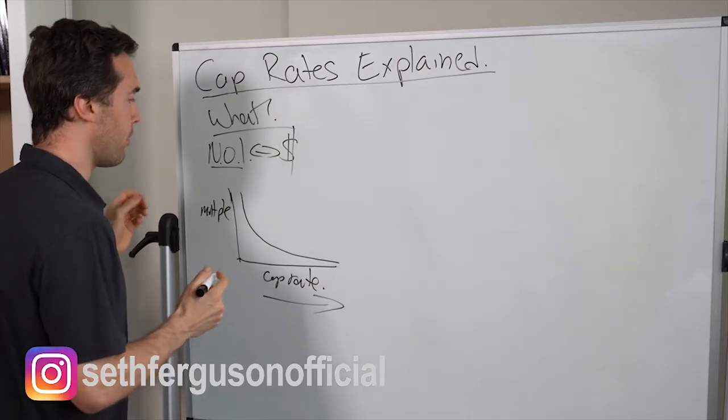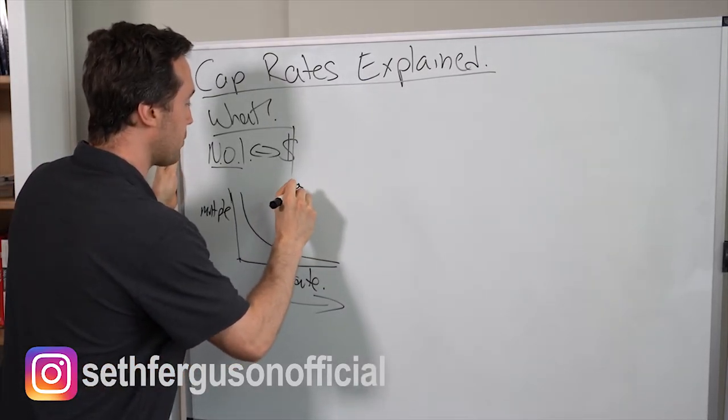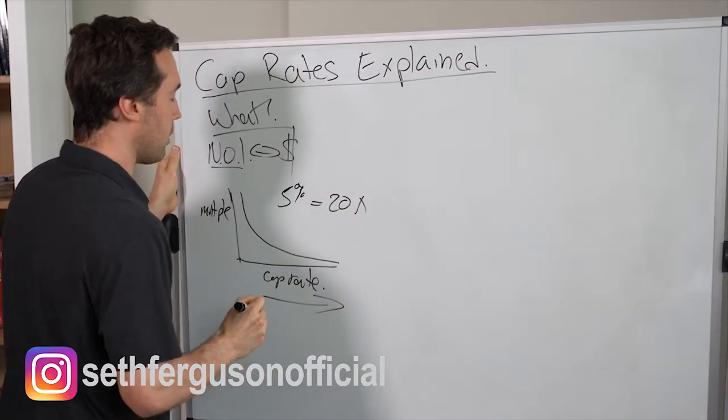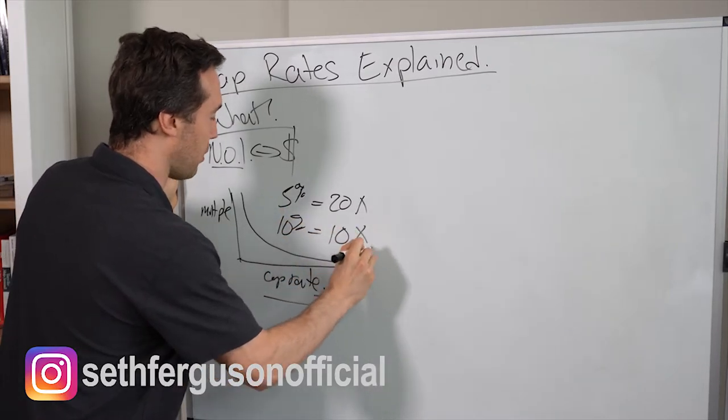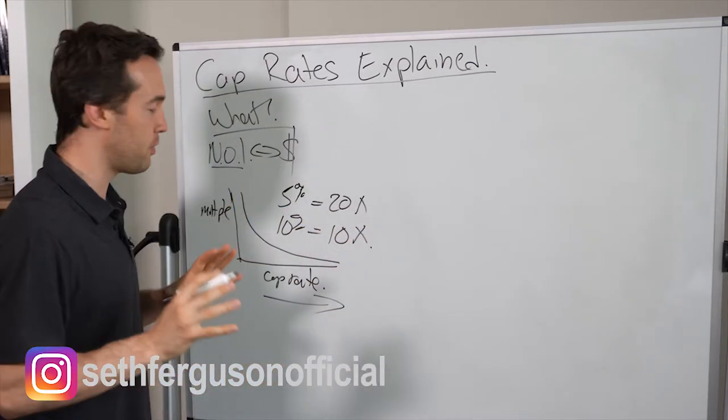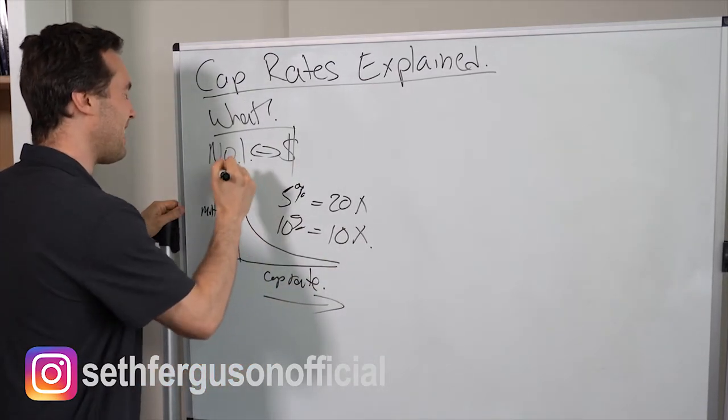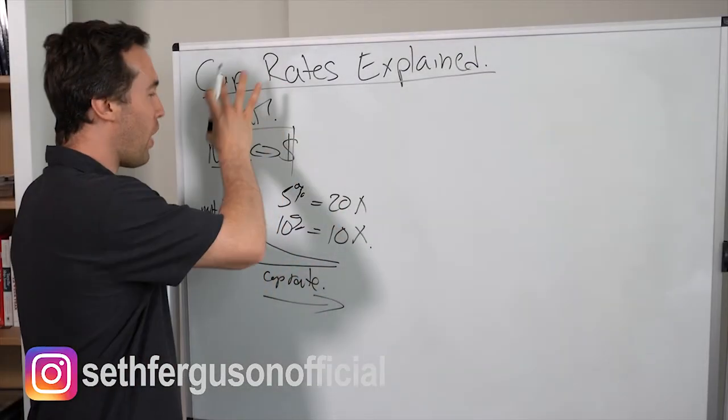So for example, a 5 cap or 5% capitalization rate equals a 20x multiple, but a 10 cap equals a 10x multiple. So basically, all you have to do is keep in mind, the lower the cap rate, the more paid for each dollar produced of NOI for that property.